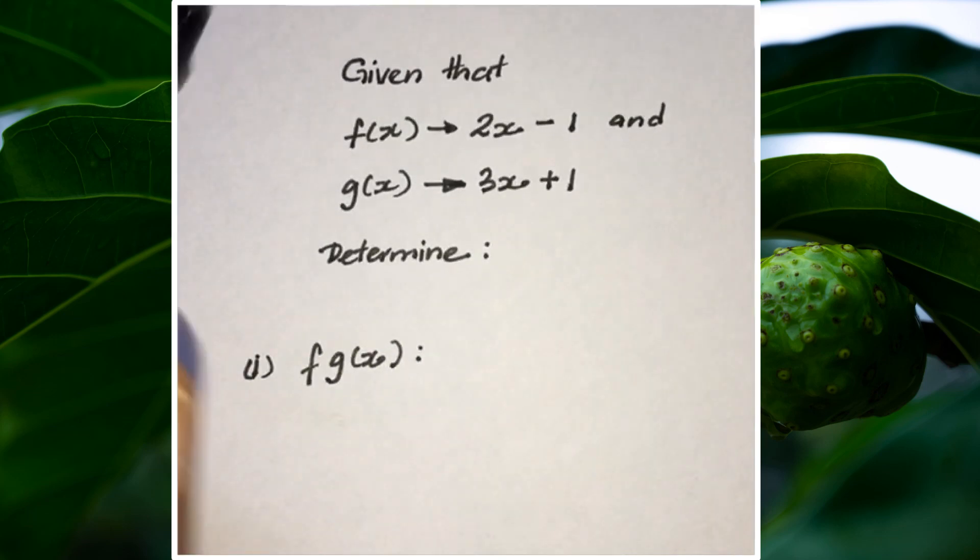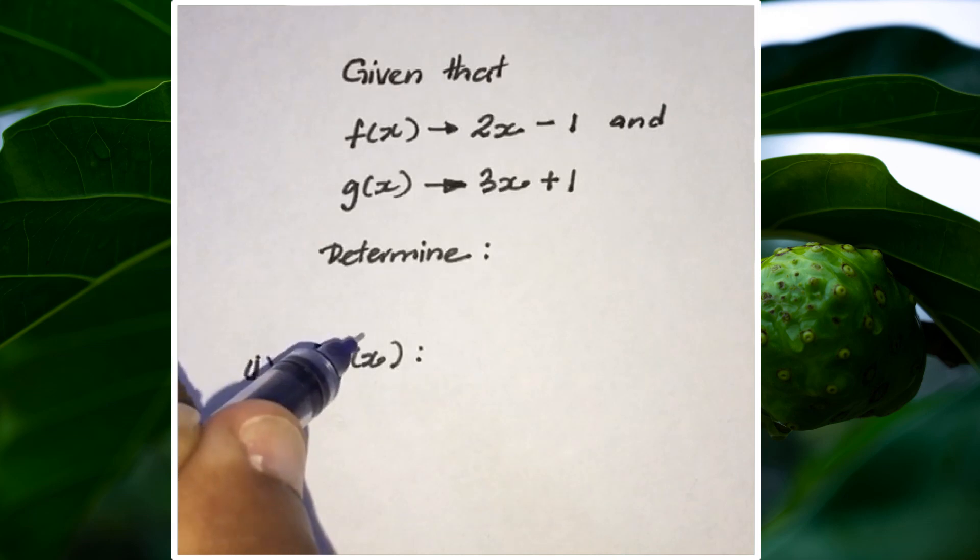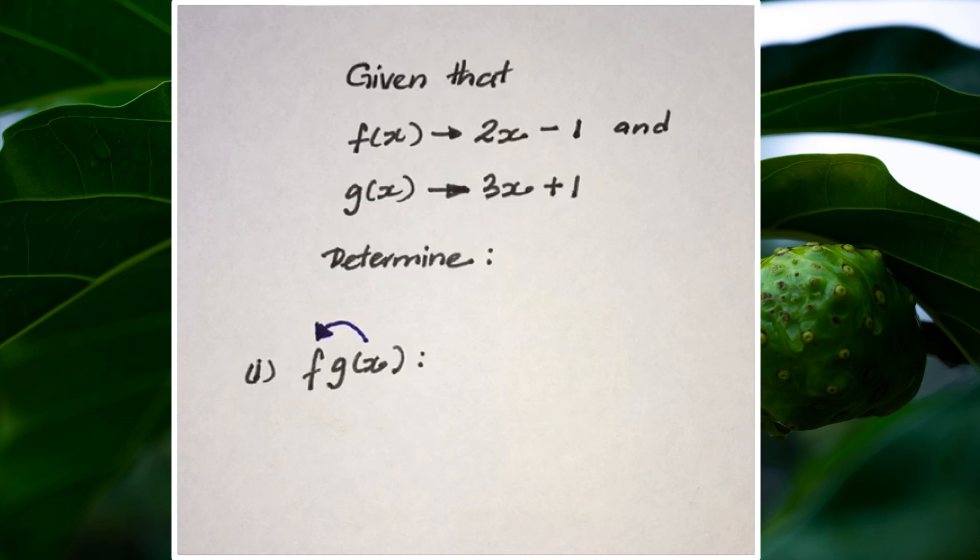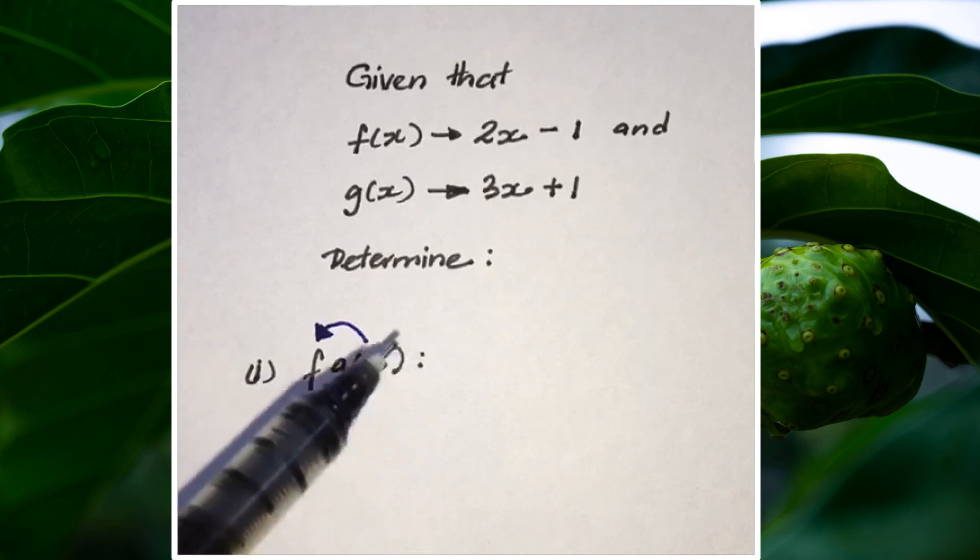What this means is we're going to take the function g and put it inside the function f. The host function, or the main function, is f, but we're putting g(x) inside of it. How I like to do this is to start with the main function, which is the one that comes out first.